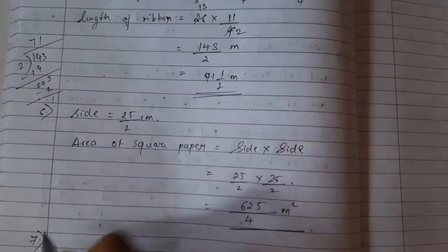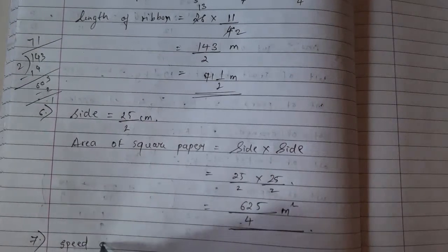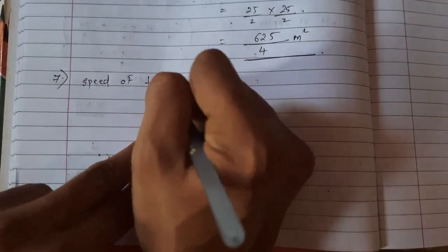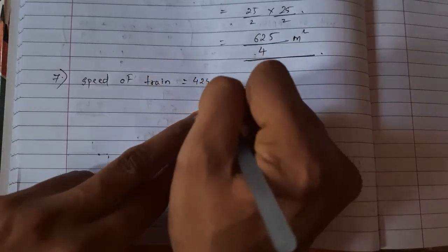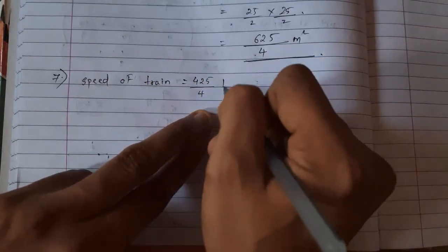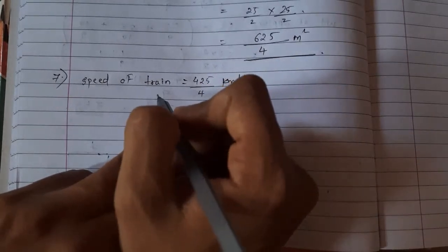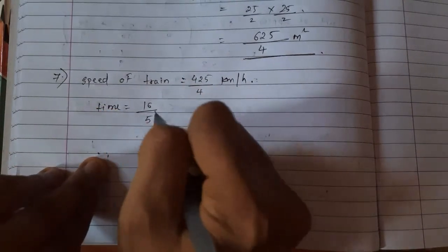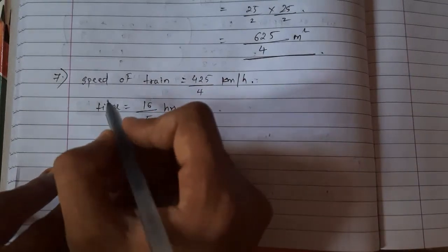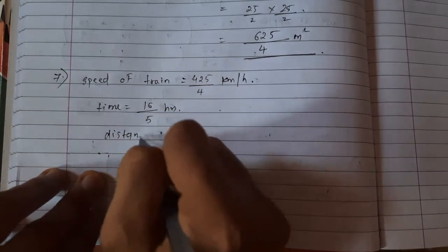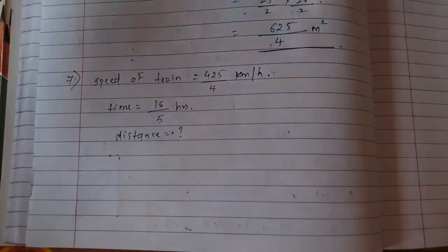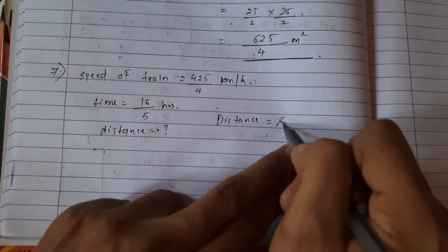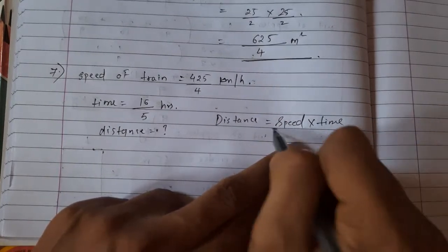Seventh. Train is moving at average speed of... Speed of train is 425 upon 4 kilometer per hour. How much distance will it cover in 16 upon 5 hours? Time is equals to 16 upon 5 hours. What they have asked us? Distance. Here you have to use this formula: Distance is equals to speed into time.